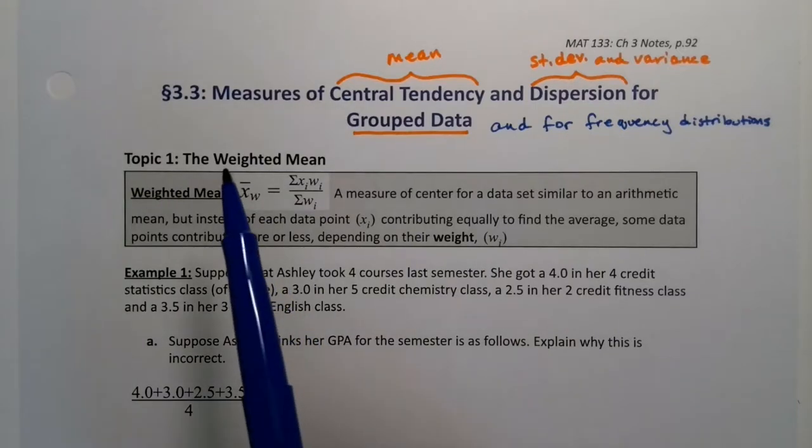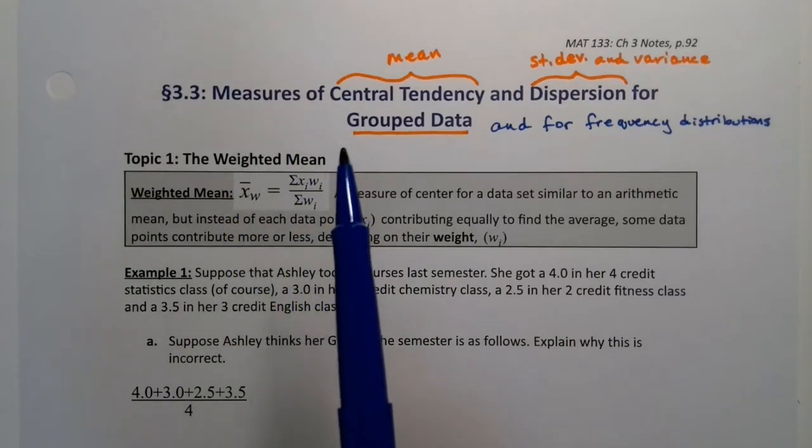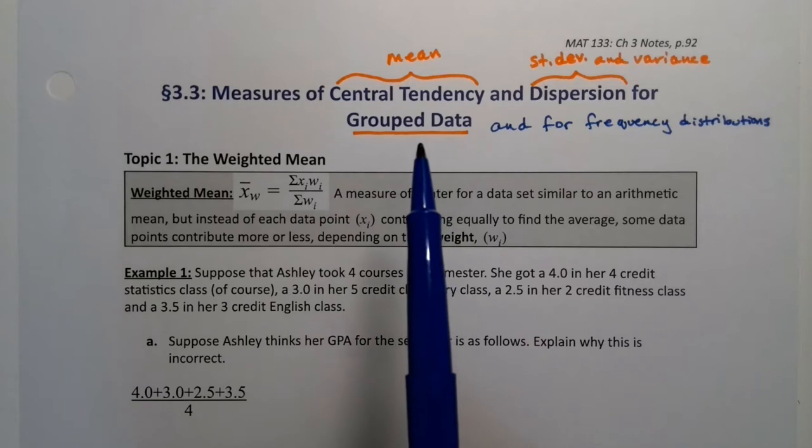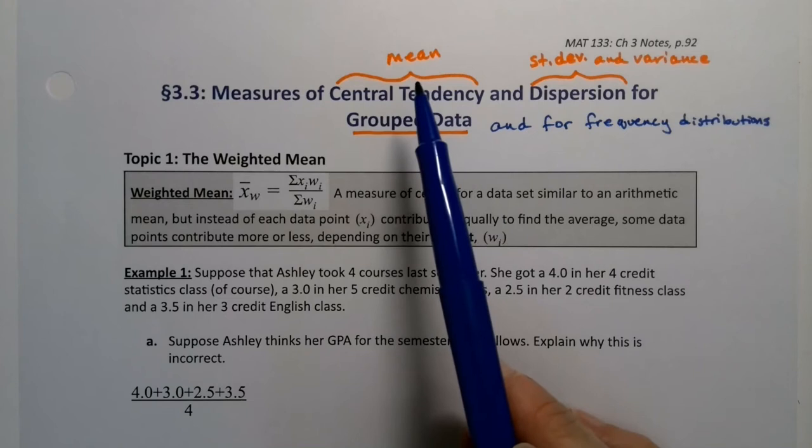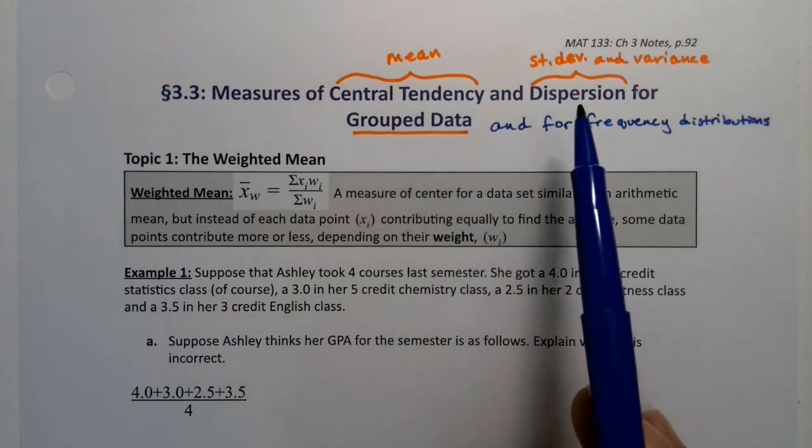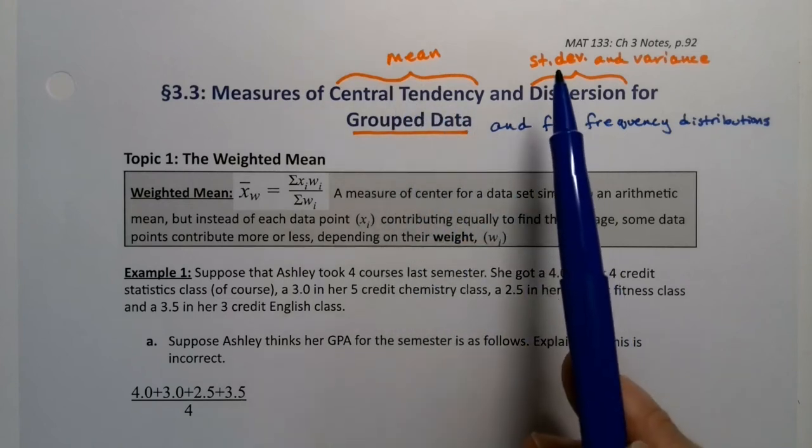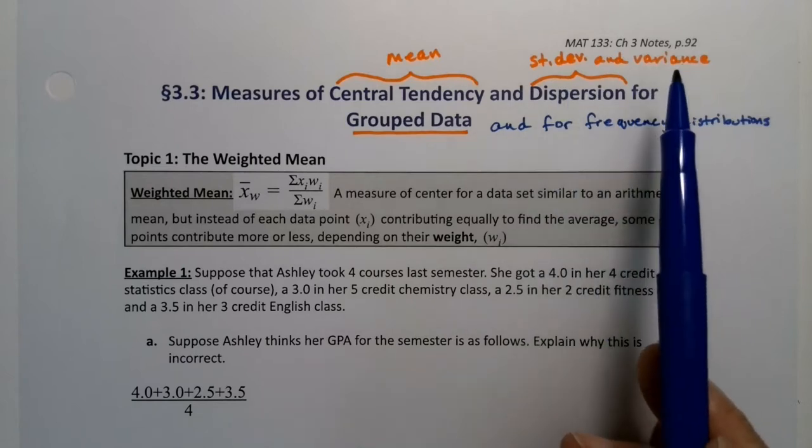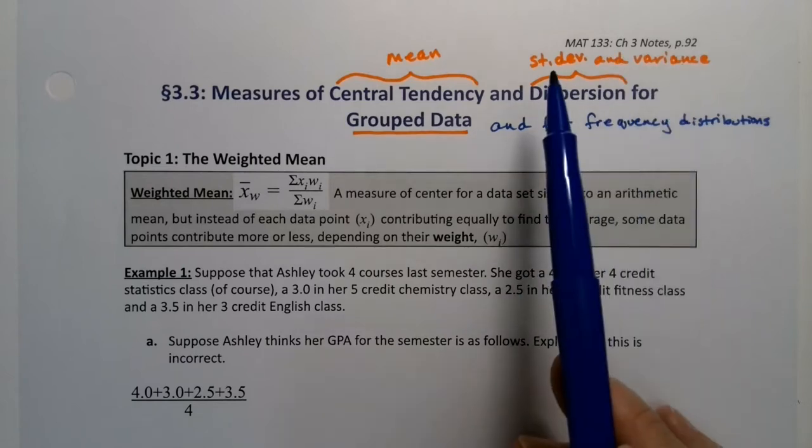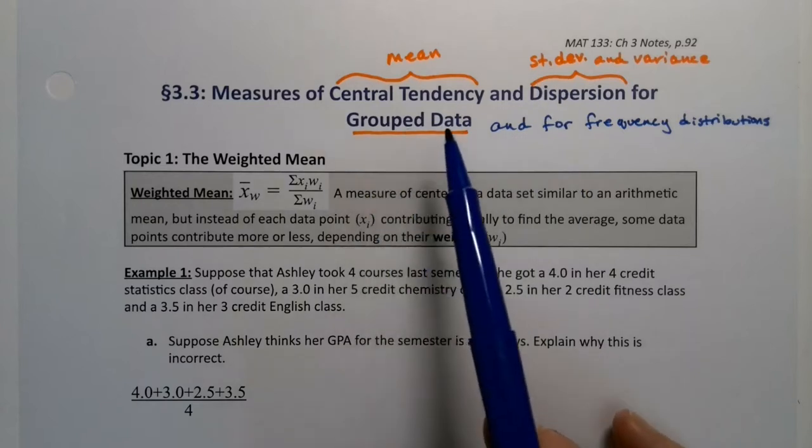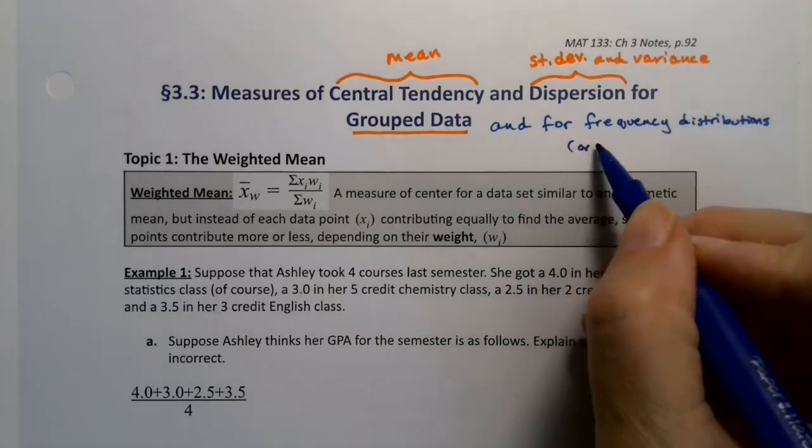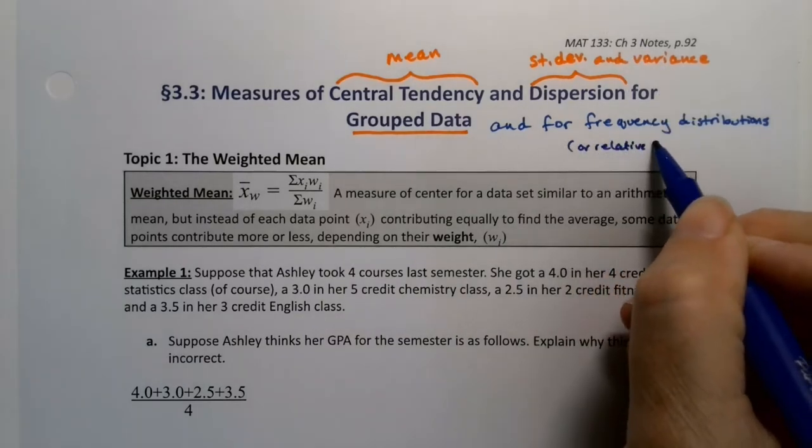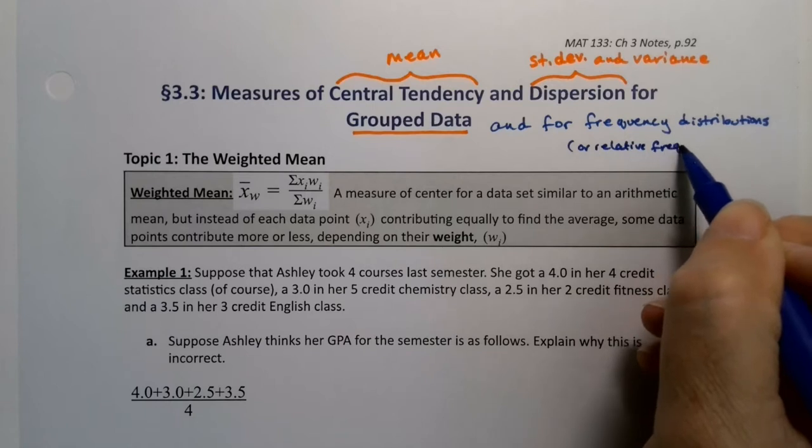In section 3.3, we're going to find the measures of central tendency and dispersion for grouped data. By central tendency we mean the mean - a type of average. Dispersion will be standard deviation and variance, which go hand-in-hand since variance is just the standard deviation squared. When I say grouped data, another way to think of it is frequency distributions or relative frequency distributions.